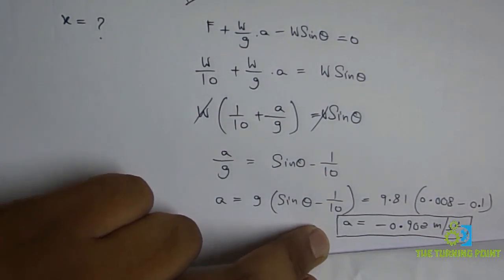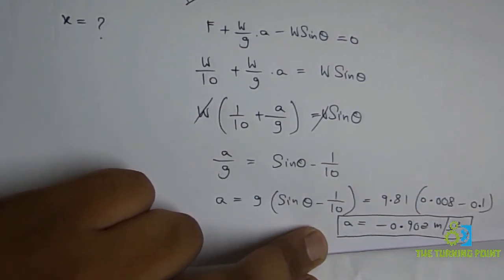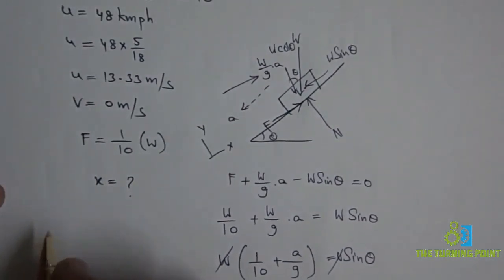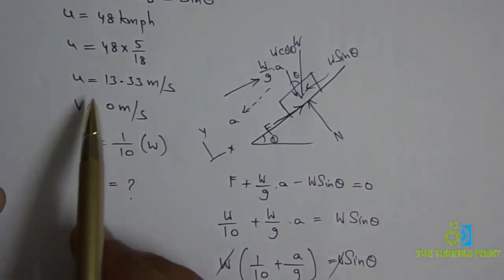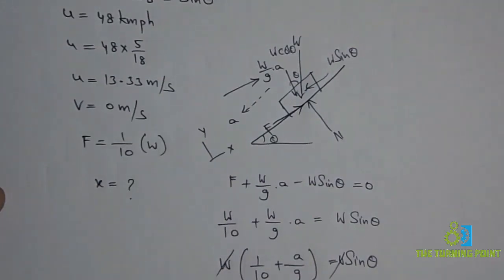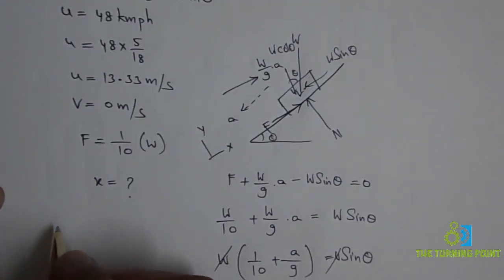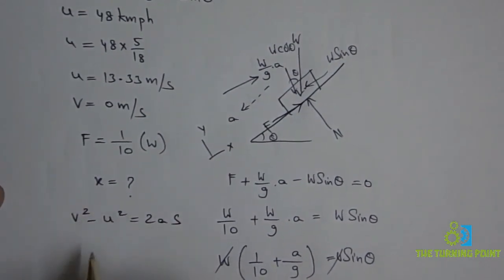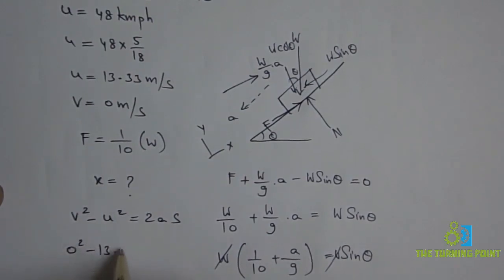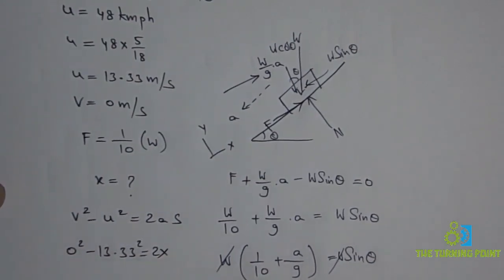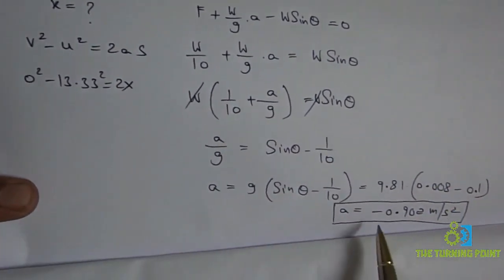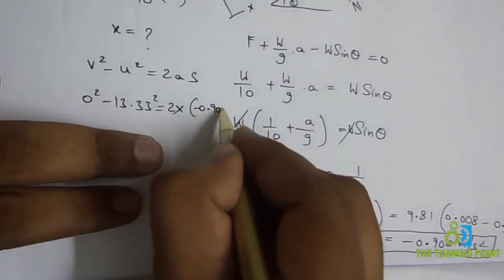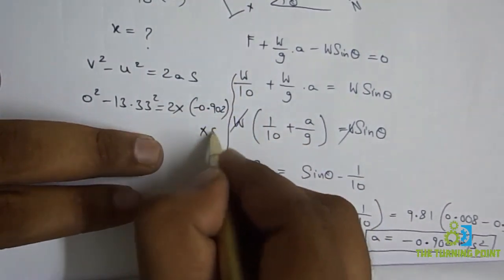Now I got the value of acceleration and I have initial velocity, final velocity, I want to find displacement. I got the acceleration, initial velocity 13.33, final velocity. I can use the relation v² - u² = 2as. Final velocity is 0, minus 13.33² = 2 × (-0.902) × S.